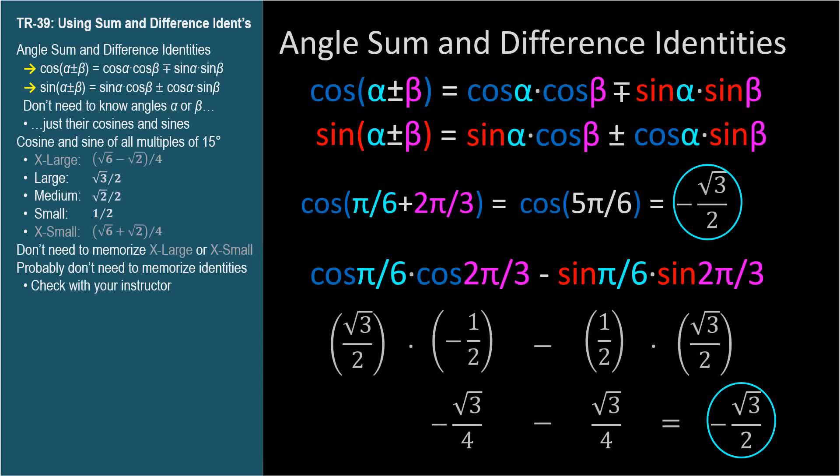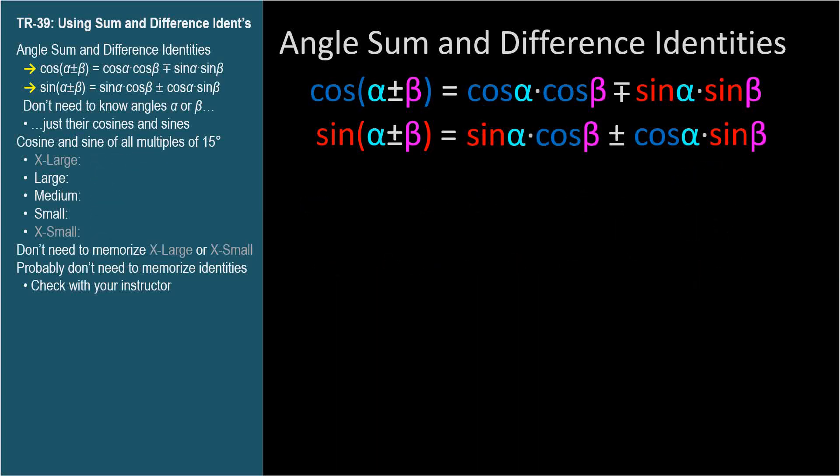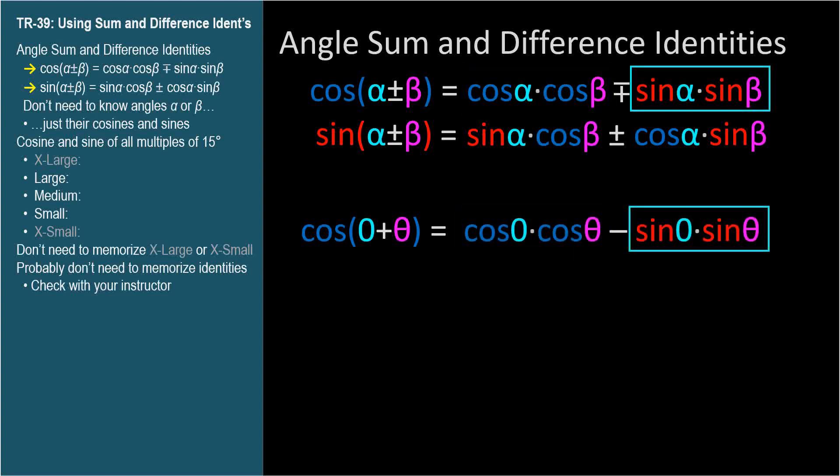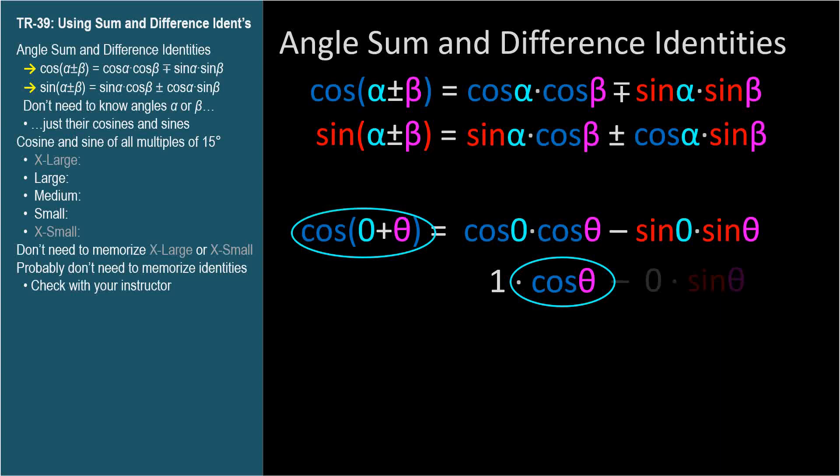Let's test these identities a different way. What happens if we let one of the angles be zero? Cosine of zero plus theta should be cosine theta, right? Let's see if the identities get it right. Here's the equation for cosine zero plus theta. Cosine zero equals 1, so this left term is simply cosine theta. In the second term, sine zero equals zero. So the right term is zero, leaving us with cosine theta, which is what we expected.